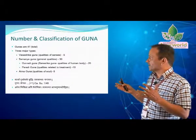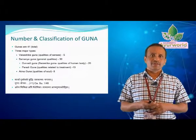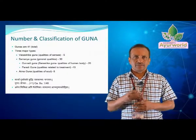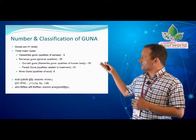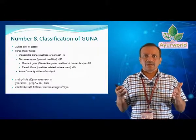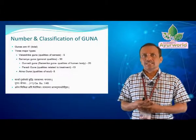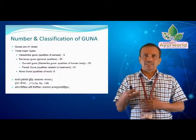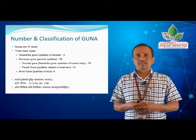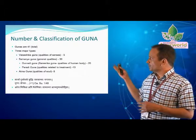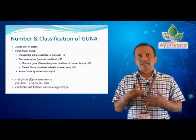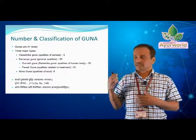When we see the number, Ayurveda accepts that these Gunas are 41. We can understand 3 varieties: one is Vaishyesha Guna, Samanya Guna, and Atma Guna. Vaishyesha Gunas are Vishyesha's because we get their knowledge through the Mahabhutas which they represent. We get their knowledge through the senses — the Panchandriya's. So Vaishyesha Gunas are Sardha Gunas: Shabdha, Sparsha, Rupa, Rasa, Gandha — these we get from our senses.